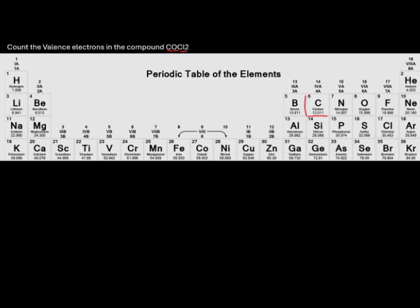We'll box in carbon, and we can see carbon is in group 4A. We also box in oxygen, and note that oxygen is in group 6A. We also box in chlorine, and note that chlorine is in group 7A. We'll write this down below: carbon is in group 4, oxygen group 6, chlorine group 7.